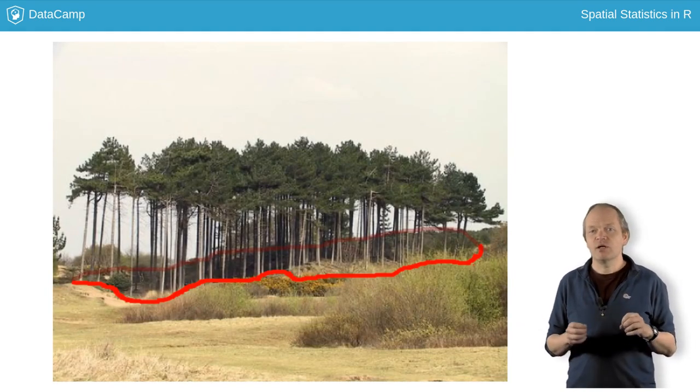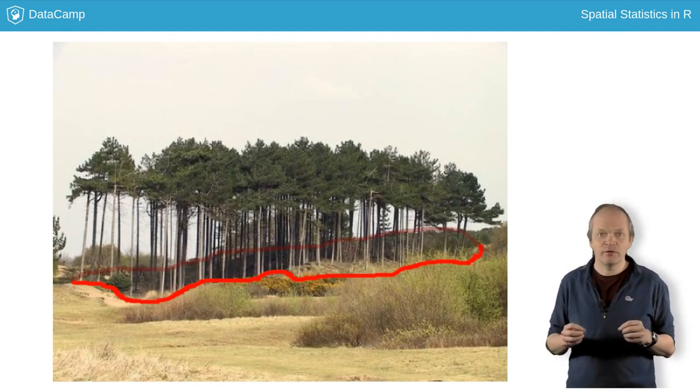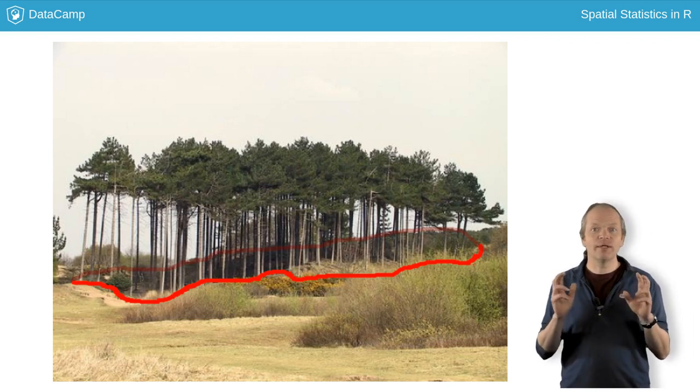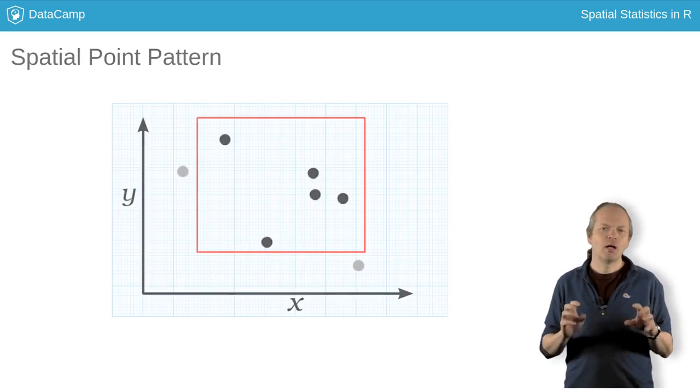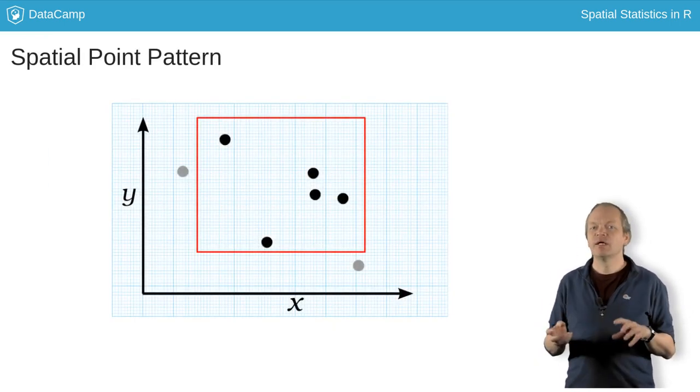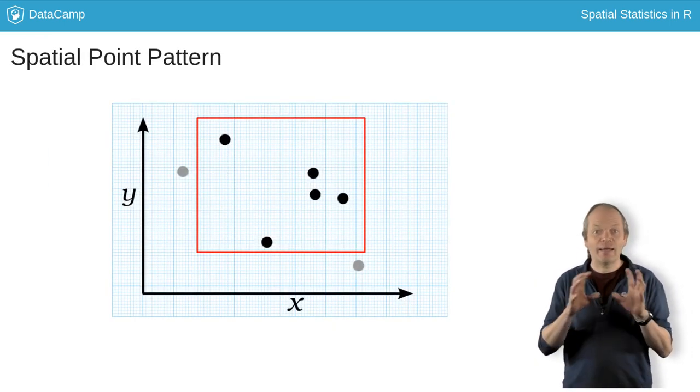Most spatial analyses are confined to a finite study area, and this area is called the window. Events happening outside the window are unobserved. A spatial point pattern is the set of observed events and the window.